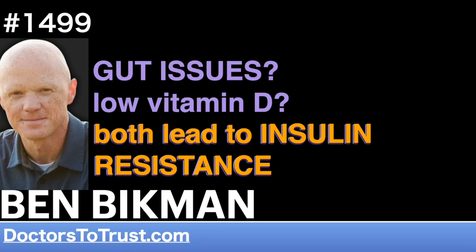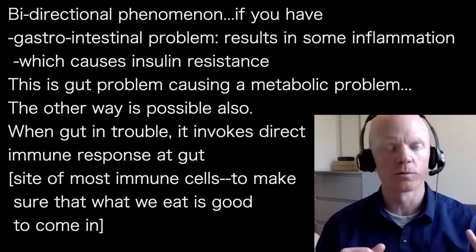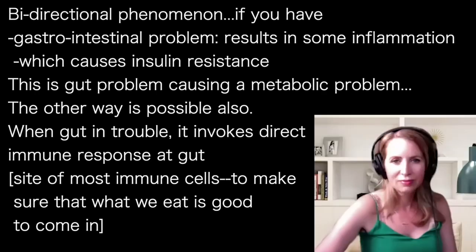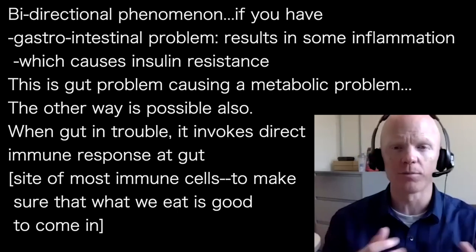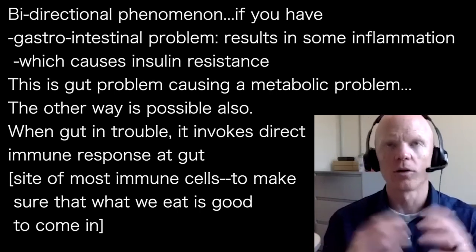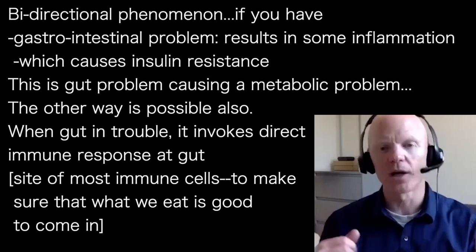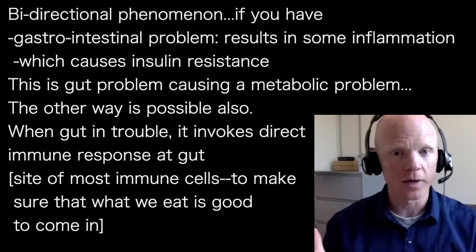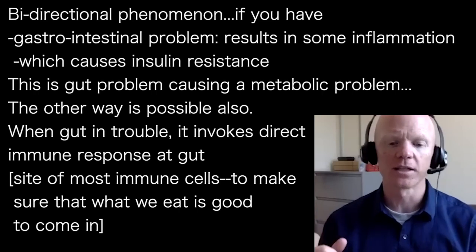This is a bidirectional phenomenon where you can have gastrointestinal problems, which almost always will result in some form of inflammation, subsequently causing insulin resistance. So you can have a gut problem causing a metabolic problem, and then it can go the other direction — you can have a metabolic problem causing a gut problem.